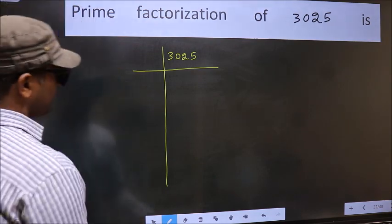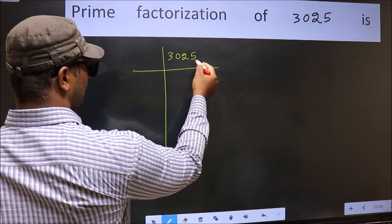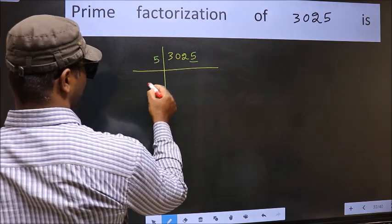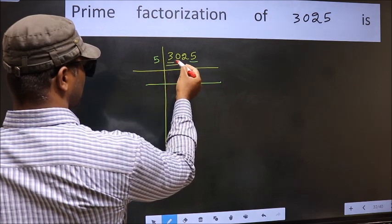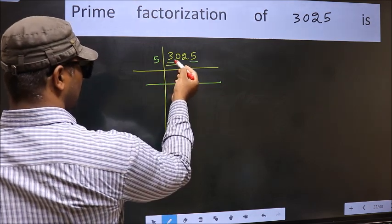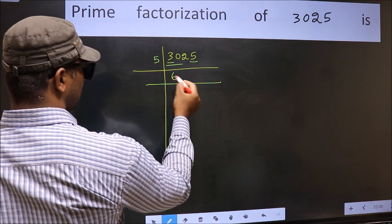Next, in this number, the last digit is 5, so take 5. The first number 3 is smaller than 5, so take 2 numbers: 30. When do we get 30 in the 5 table? 5 times 6 is 30.